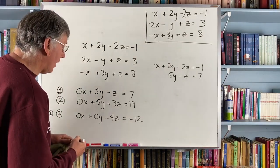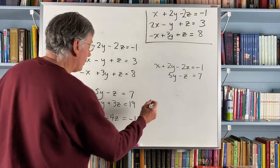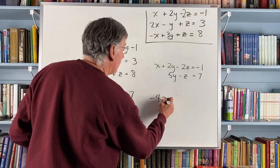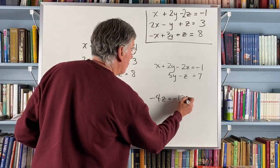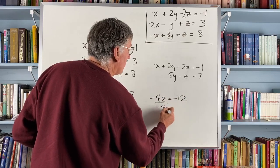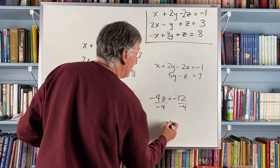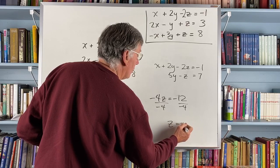From that, I can decide, well, if it's true that minus 4z equals minus 12, divide both sides by minus 4 and I get z is equal to 3.